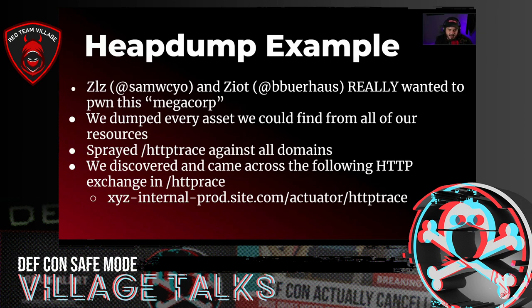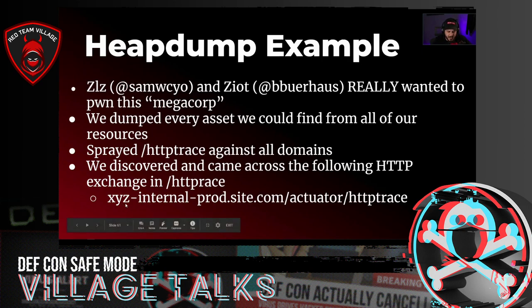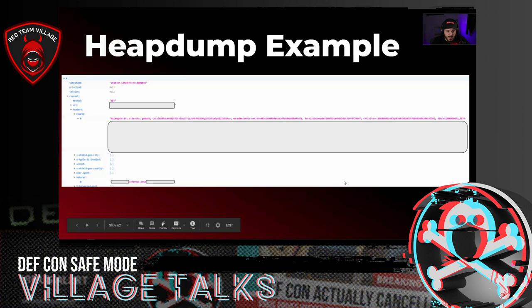ZLZ and Zayed really wanted to hack this megacorp — they were on a mission to own this company and see what it looked like from the inside. They dumped every single asset they could find: all IP scans, historic data, old and new data — everything into one text file. We sprayed every single one with /actuator/httptrace and looked for which ones came back. In one exchange, we came across the URL: XYZ-internal-prod.site.com/actuator/httptrace. When we looked at it, the trace endpoint showed timestamps, request types, URLs, all headers including cookies, and user-agent data. The words "internal-prod megacorp" immediately got our attention.